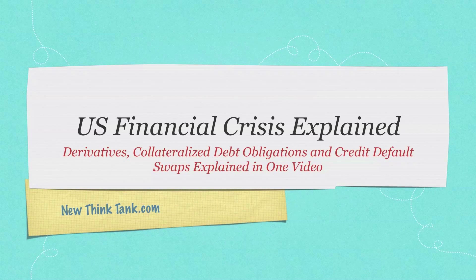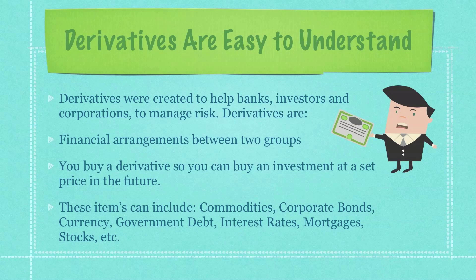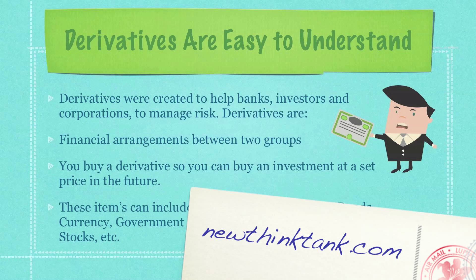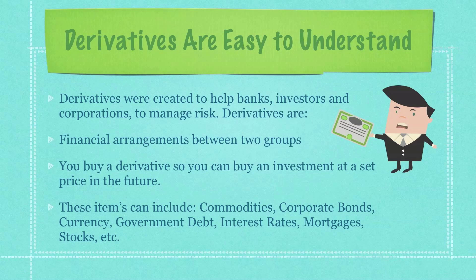By the end of this video, you're going to understand derivatives, collateralized debt obligations, and credit default swaps, and a whole bunch more. This stuff really isn't that complicated, and you should never trust someone who says that something is complicated as they hand you your money. Derivatives were simply created to help banks, investors, and corporations manage risk. It's just a financial arrangement between two groups, and a person would buy a derivative so that they have the option to buy an investment at a set price in the future, no matter what happens to that investment — whether the price increases or not — they can still purchase it at that set price by buying the derivative.